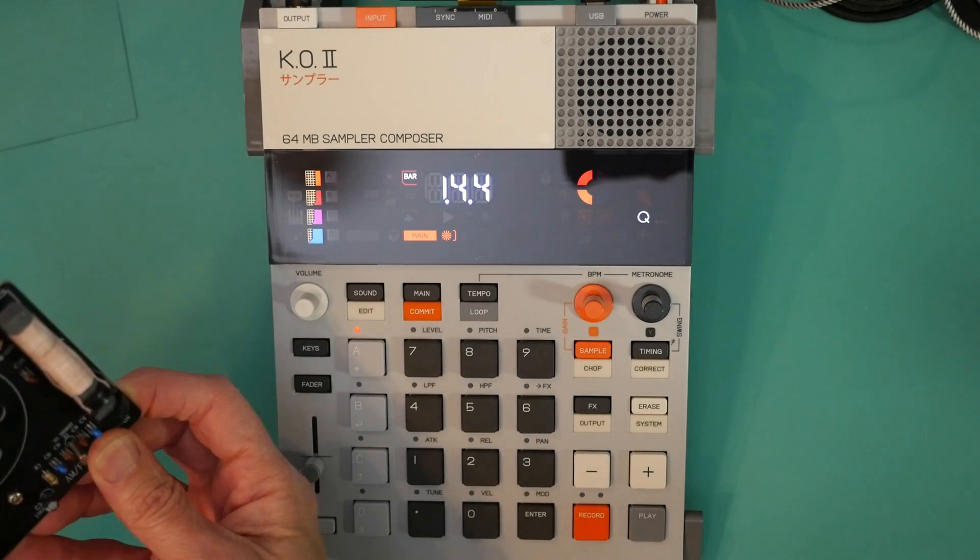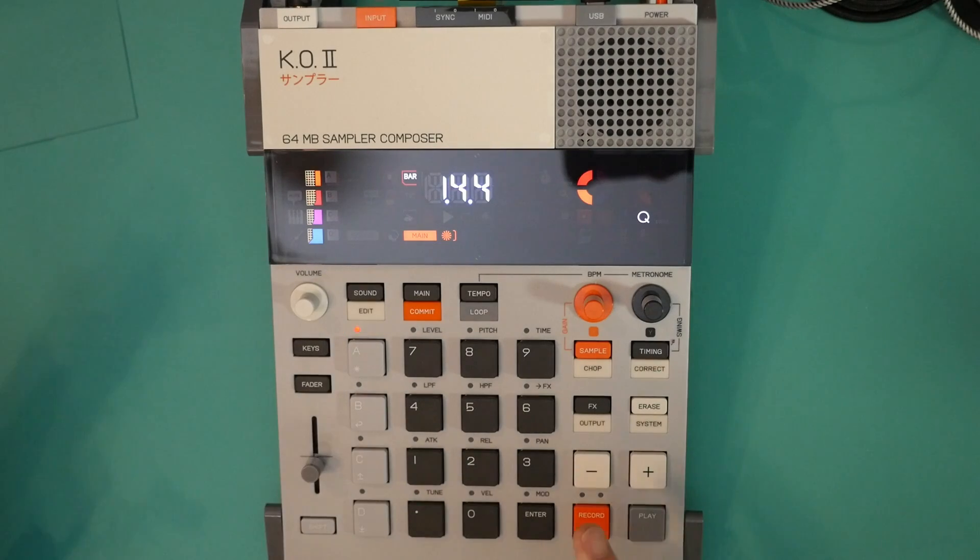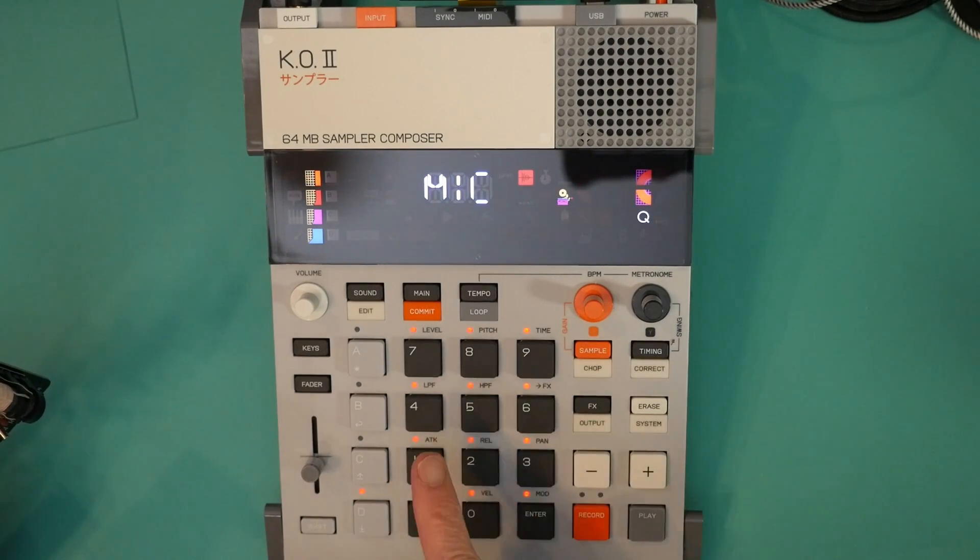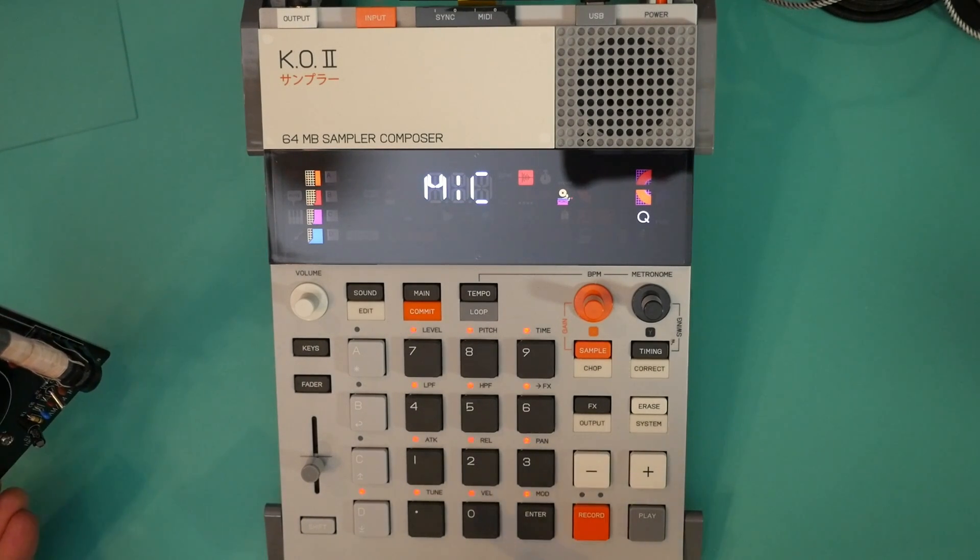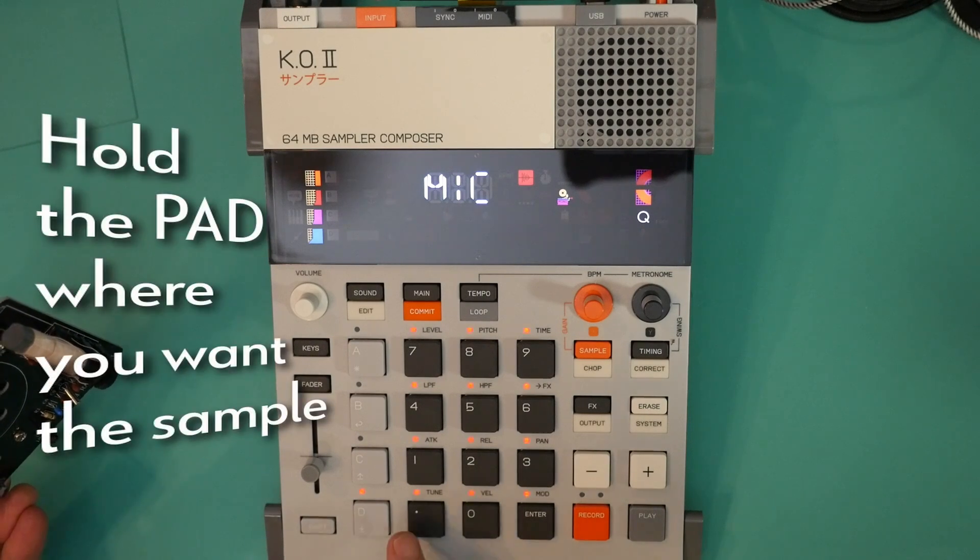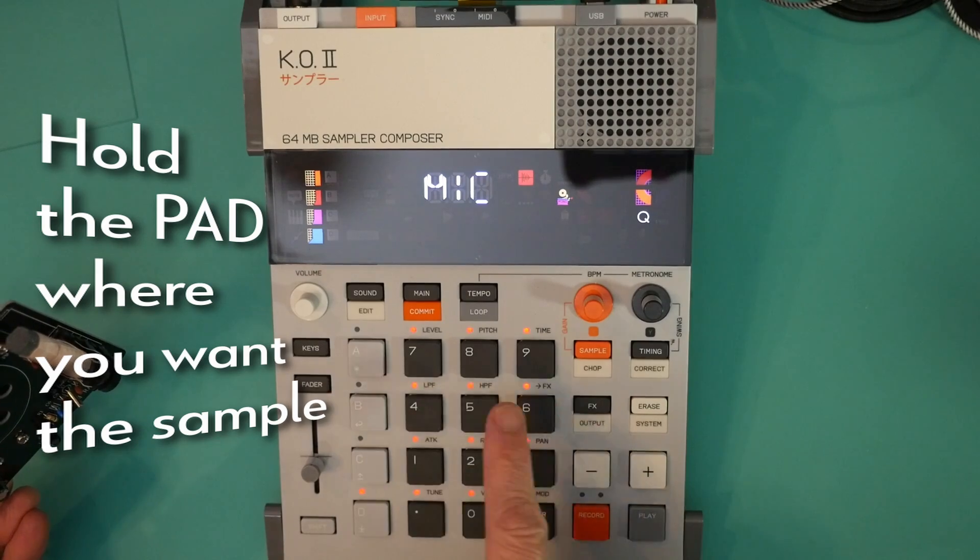Okay. So to sample this first, we get into group D, which is where we're going to sample to. We hit the sample button. And all the pad LEDs blink red. We're going to play our source. And when it's at the point we want to record, we press and hold the pad to which you want to record the sample. So we're going to record it to this, what I call the first pad, if you're going up this way.